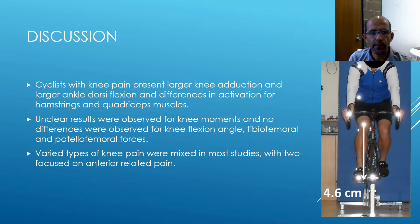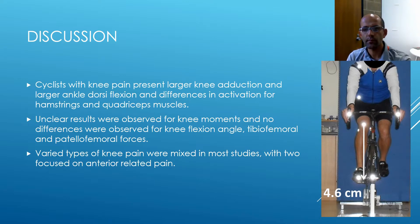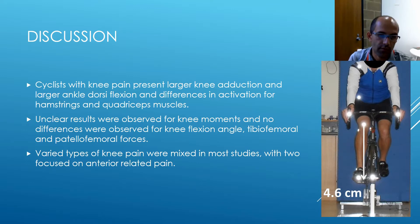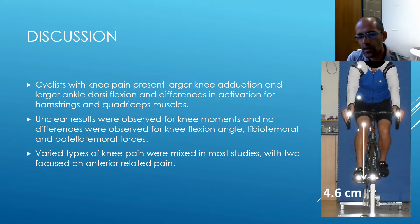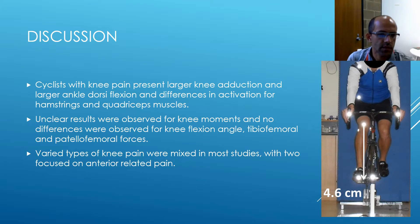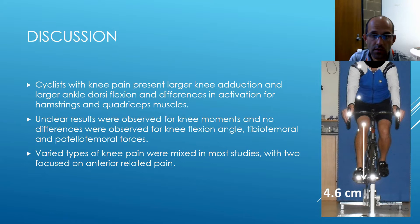Cyclists with knee pain present large knee adduction, as shown on the slide, with the knee projecting medially in relation to the pedals and foot, and larger ankle dorsiflexion compared to pain-free cyclists. Differences were also found in muscle activation for hamstrings and quadriceps. More details are available in the full paper.